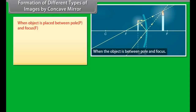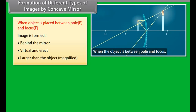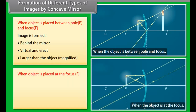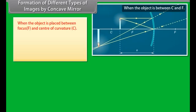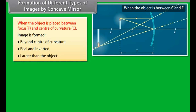Formation of images by concave mirror: When the object is placed between pole P and focus F, the image is formed behind the mirror — virtual, erect, and larger than the object (magnified). When the object is placed at focus F, the image is formed at infinity — real, inverted, and highly enlarged. When the object is placed between focus F and center of curvature C, the image is formed beyond C — real, inverted, and larger than the object.